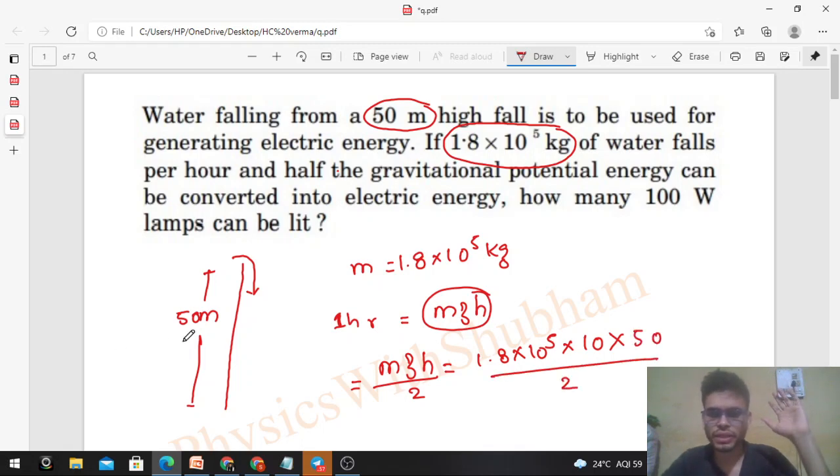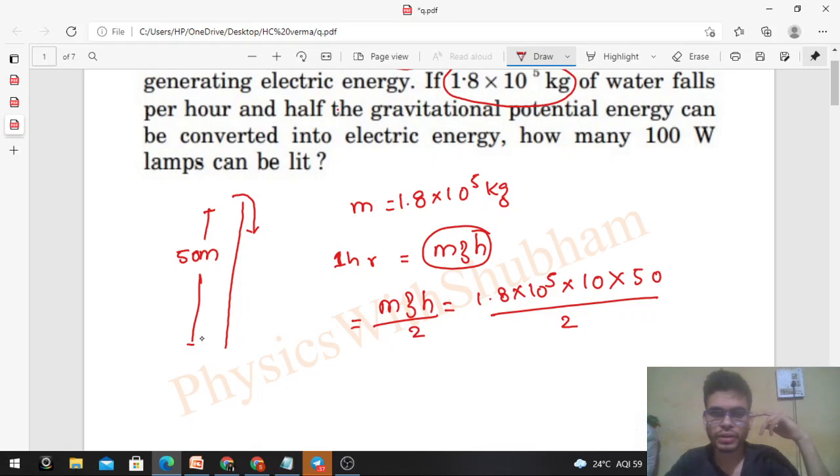Now how many 100 watt lamps we can light? They are 100 watt, right? What does that mean? That bulb will consume 100 joules of energy in one second. So for one hour, how much energy will it need? How much energy is needed by this 100 watt bulb in one hour?